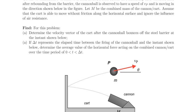At some time after rebounding from the barrier, the cannonball is observed to have a speed vp and is moving in the direction shown below, namely at an angle theta with respect to the horizon.